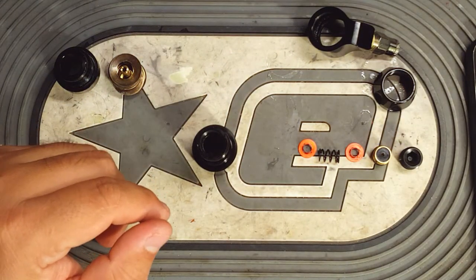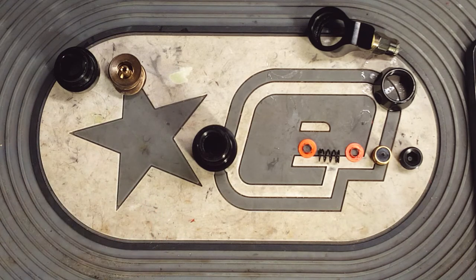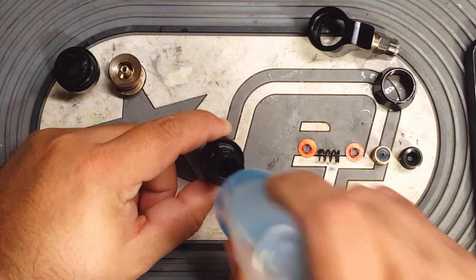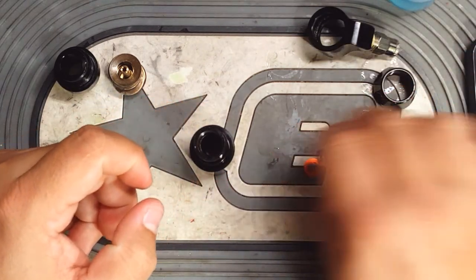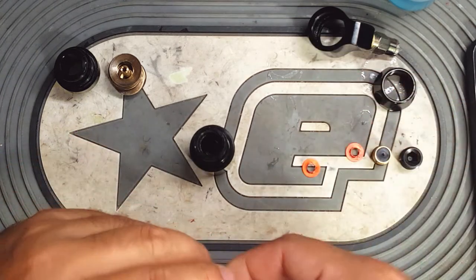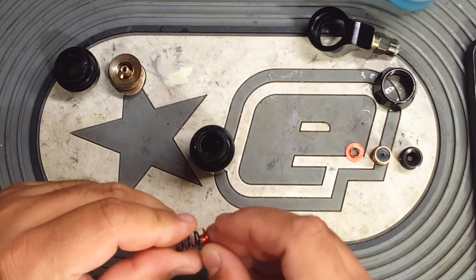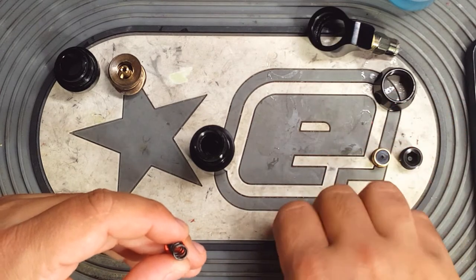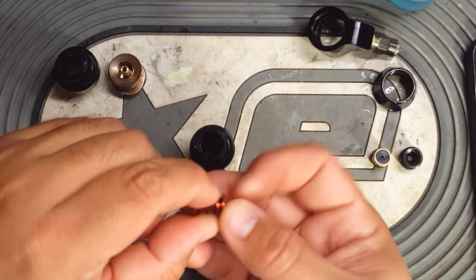I'm gonna put a little bit of oil on it. Then the top hat assembly should have the two red top hats. One on the bottom and one on the top of the spring. The top of the top hats face each other. Like that.